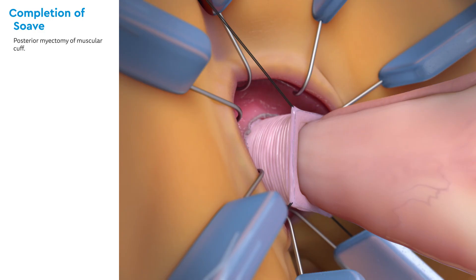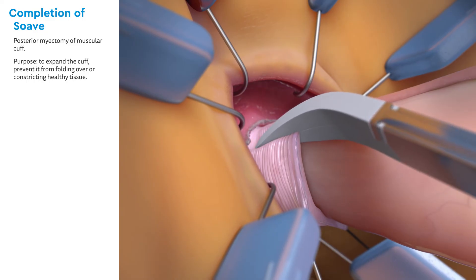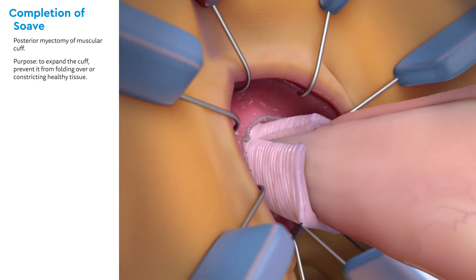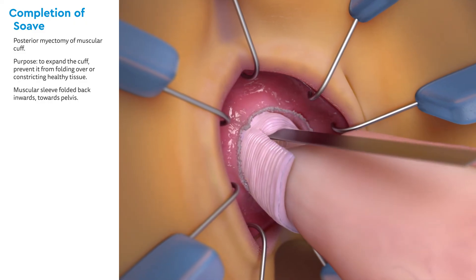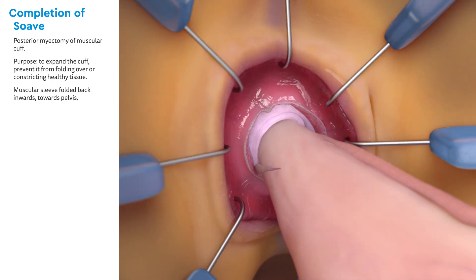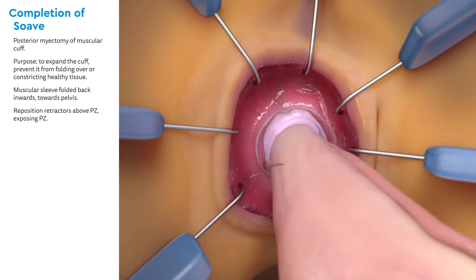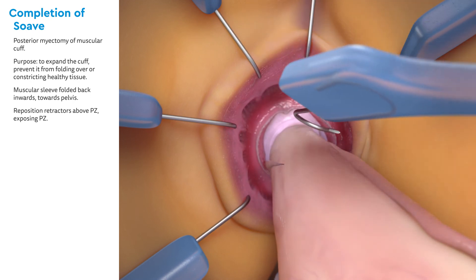Next, a posterior myectomy of the muscular cuff is made. Its purpose is to expand the diameter of the cuff, thereby preventing it from folding over or constricting the colon used for the pull-through. The traction sutures are removed and the cuff is folded back inwards towards the pelvis. The retractors are then repositioned above or distal to the pectinate zone to visualize the whole anal canal and distal rectum for the colorectal anastomosis.